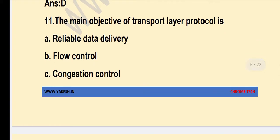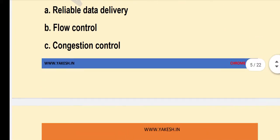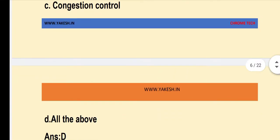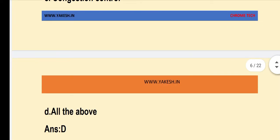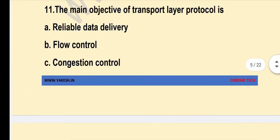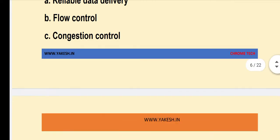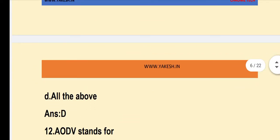The main objective of a transport layer protocol includes: reliable data delivery, flow control, and congestion control. Option D — All of the above — is the correct answer.